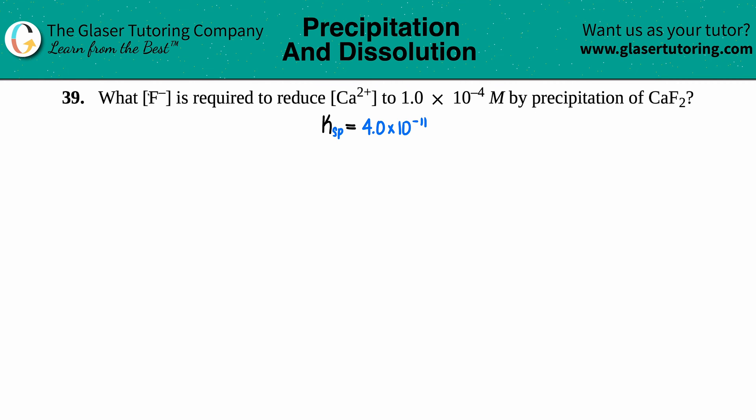Number 39: What fluoride ion concentration [F-] is required to reduce the calcium ion concentration [Ca2+] to 1.0 × 10^-4 M by precipitation of calcium fluoride CaF2? Okay, so we're talking about precipitation. Remember, precipitation is basically talking about solids, making solids, and we have a solid of the compound CaF2.